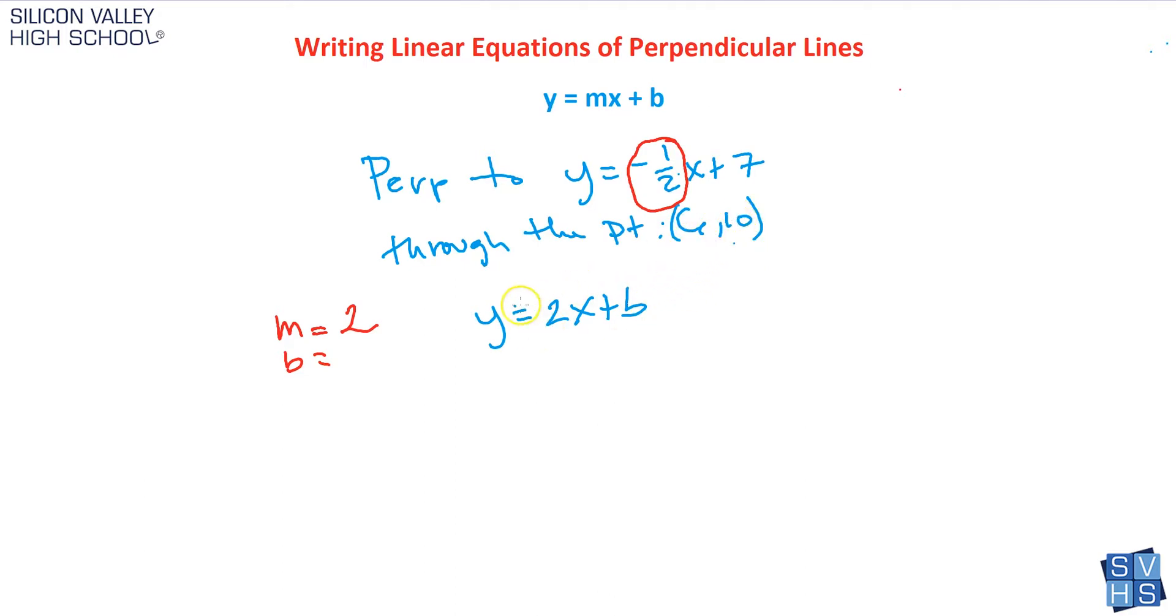This is my y, it goes in here. So I have 10 equals two times my x value, looks like six, plus b. 10 equals 12 plus b, minus my 12, minus my 12. Looks like negative two is b.